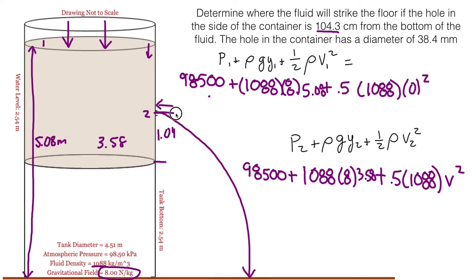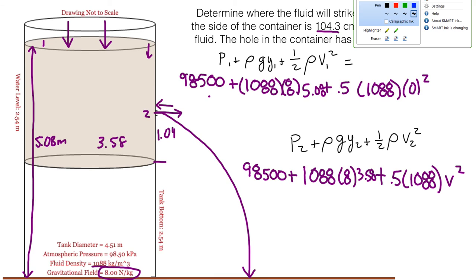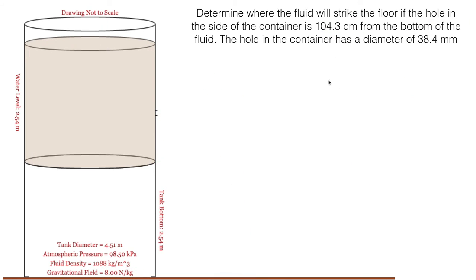Once you get that V, that is the initial velocity of your water, you then want to do a projectile problem. So that means we break it up in the two parts, a horizontal part and a vertical part. The horizontal part, we have delta X, we have V, and we have T.